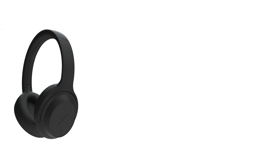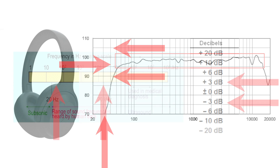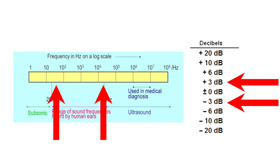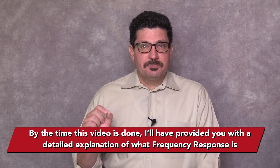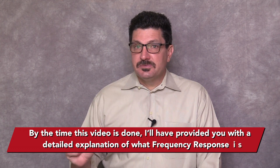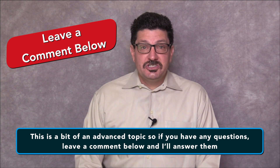A set of headphones may list a frequency response specification of say 34 Hertz to 20 kilohertz plus or minus 3 decibels — but what exactly does that mean? It indicates that sound between 34 Hertz and 20 kilohertz is accurate within plus or minus 3 decibels. By the time this video is done, I'll have provided you with a detailed explanation of what frequency response is. Just a word of warning: this is a bit of an advanced topic, so if you do have questions, leave a comment below and I'll answer them for you.